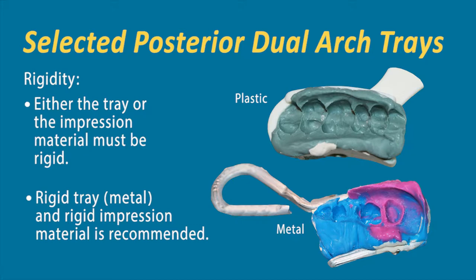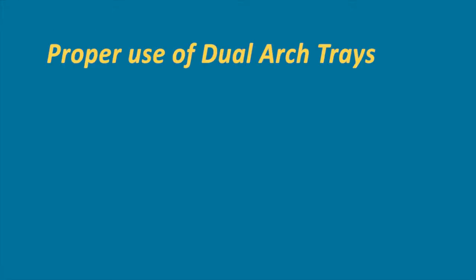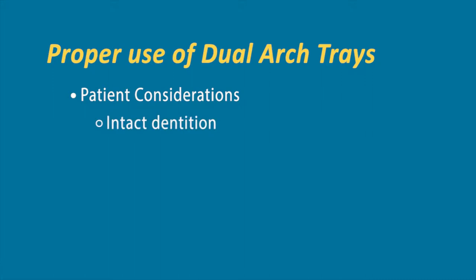Now let's talk about patient selection—where you would or would not want to use a dual arch or triple tray. When looking at your patients, you want to make sure you have intact dentition. A triple tray can only capture roughly six to seven teeth. But if you're prepping three or four units within that triple tray, that only leaves you two to three units of intact dentition—as a laboratory, only two to three teeth to articulate to. It's just not enough information for a proper mounting. This is a case we would not recommend using a dual arch system.